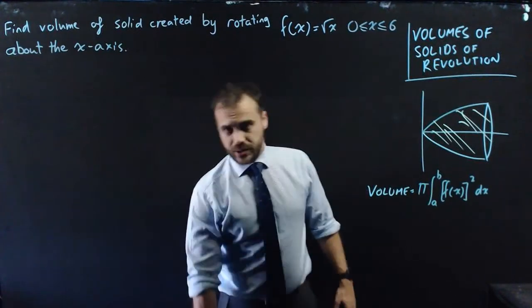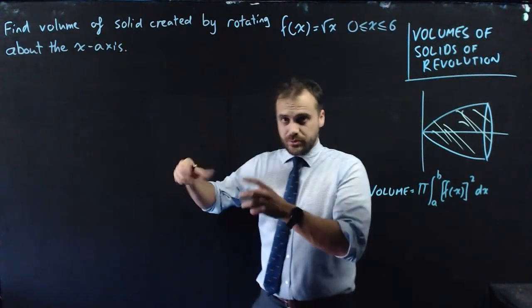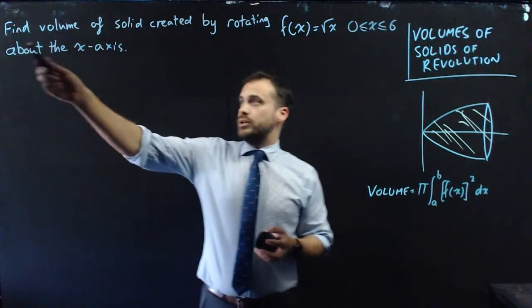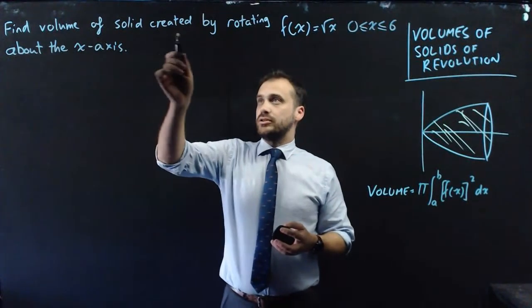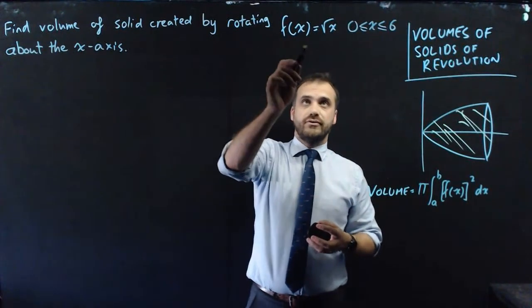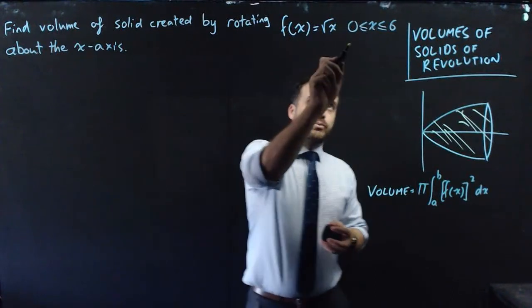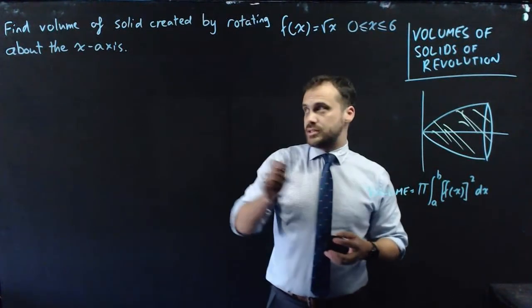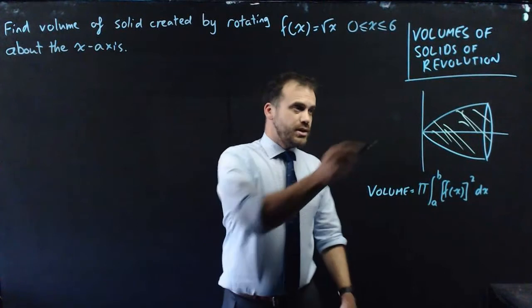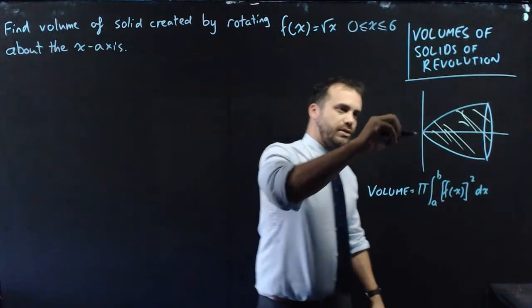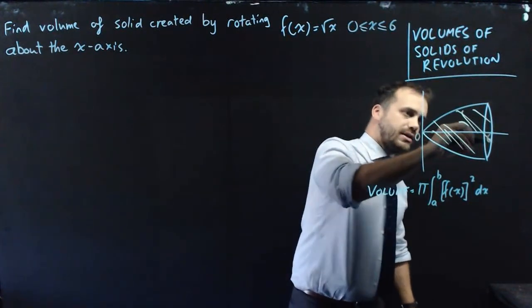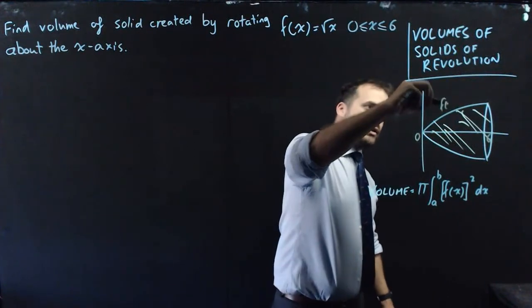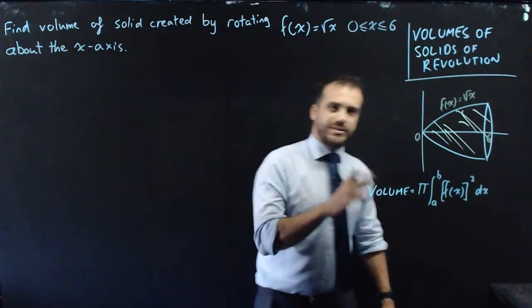So that brings us to the question that we started with. We drew that nice little picture. We have that nice little animation. We're going to find the volume of solid created by rotating f of x equals root x, where 0 is less than x is less than 6, about the x-axis. So it's the picture I've been drawing the whole time, between 0 and 6, where the function is f of x equals root x.